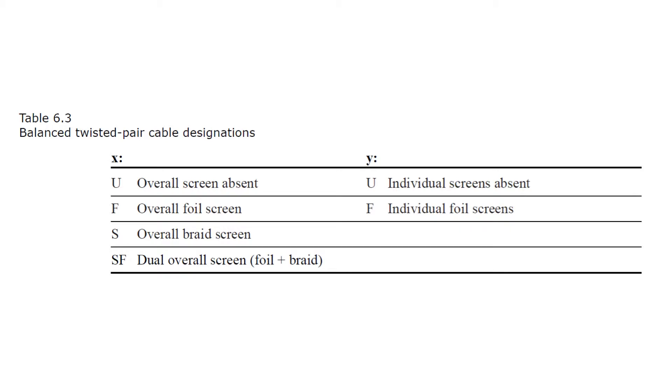ISO-IEC 11801 uses an XY designation, where X is the overall screen type and Y is the individual pair screen type. Table 6.3 in your TDMM describes these designations.